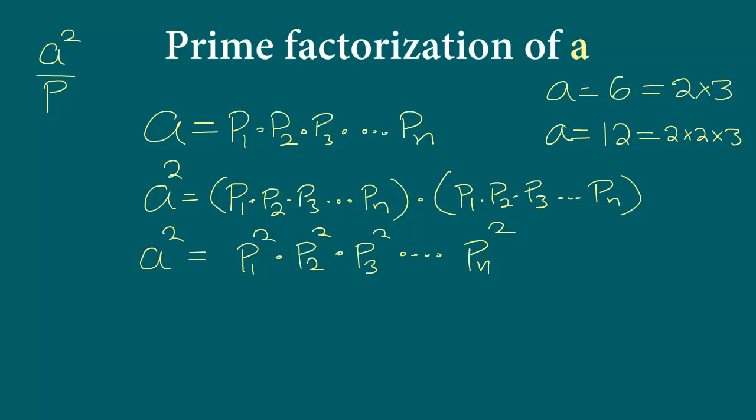Now it is given to us that a squared is divisible by p where p is any prime number. That means this entire thing can be divisible by p. Now let's think about it for a moment. Now if we say that this number, each of the p's in the numerator they are prime factors, prime numbers. So p1 squared times p2 squared times p3 squared all the way to pn squared. If this entire thing is divisible by p, what does it mean? It means that p is a prime number. It means one of these prime numbers, it must be equal to p.